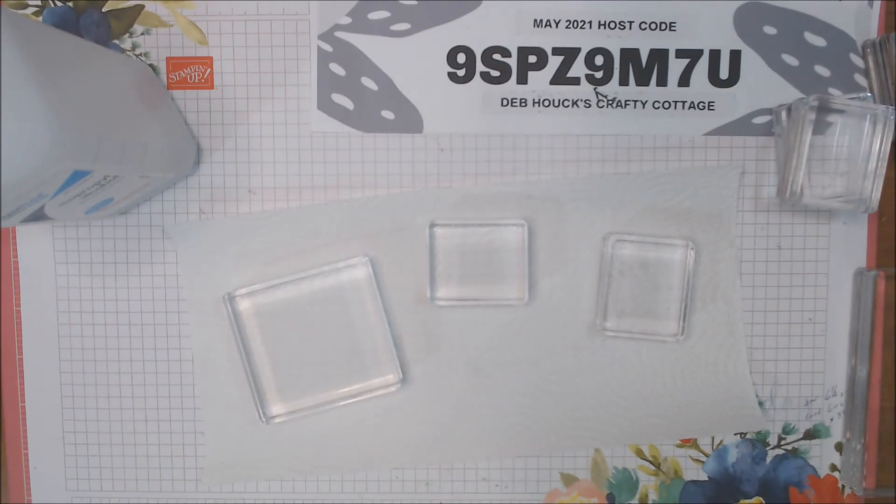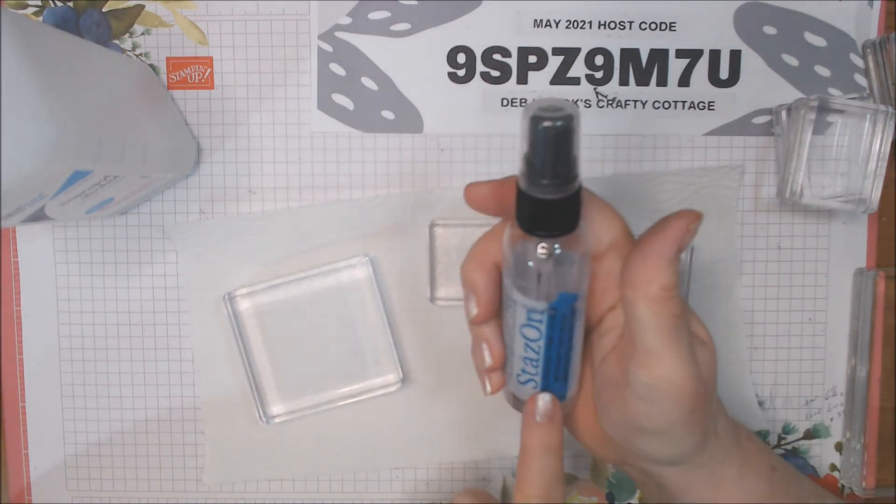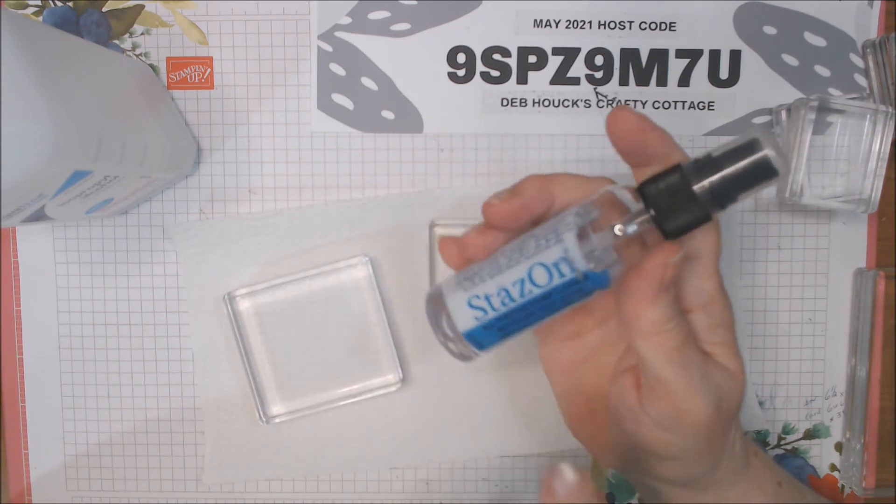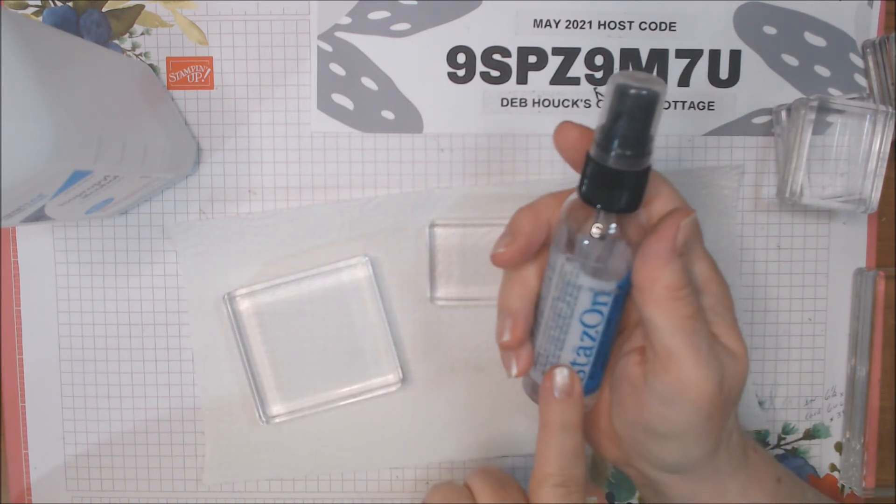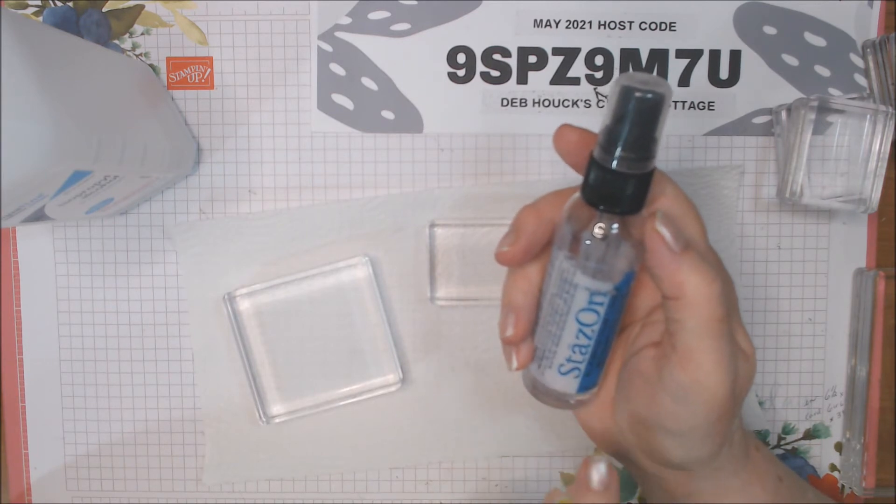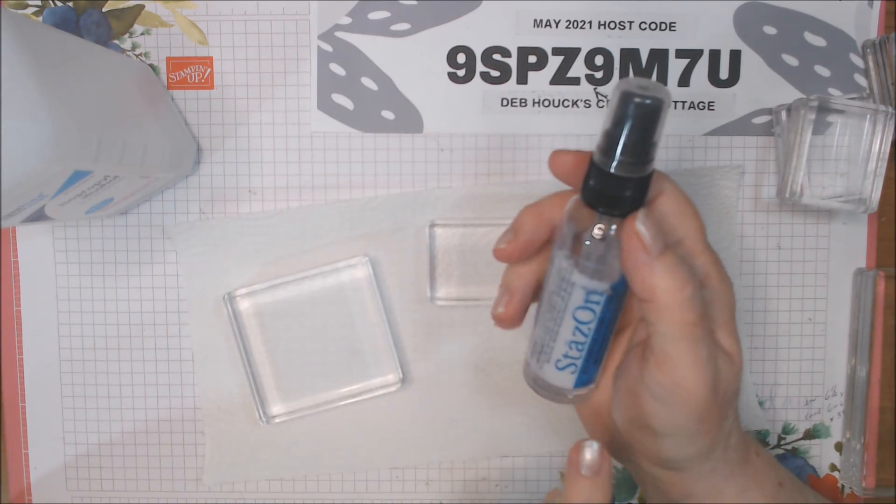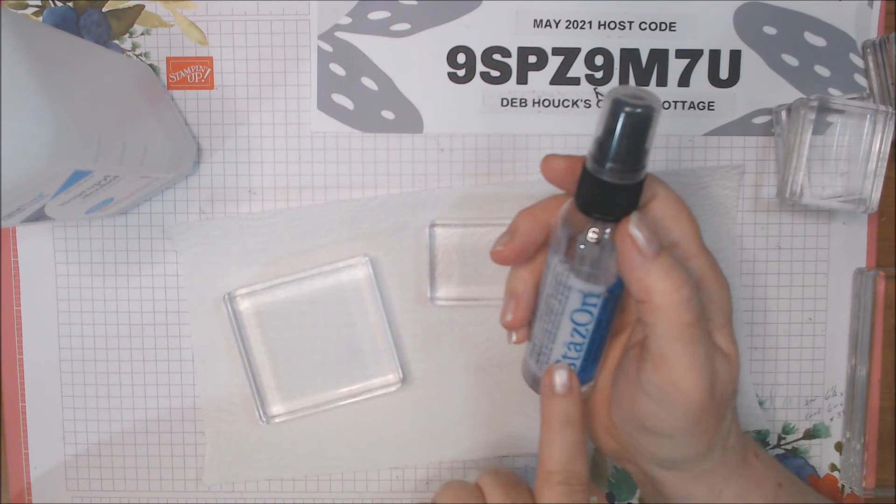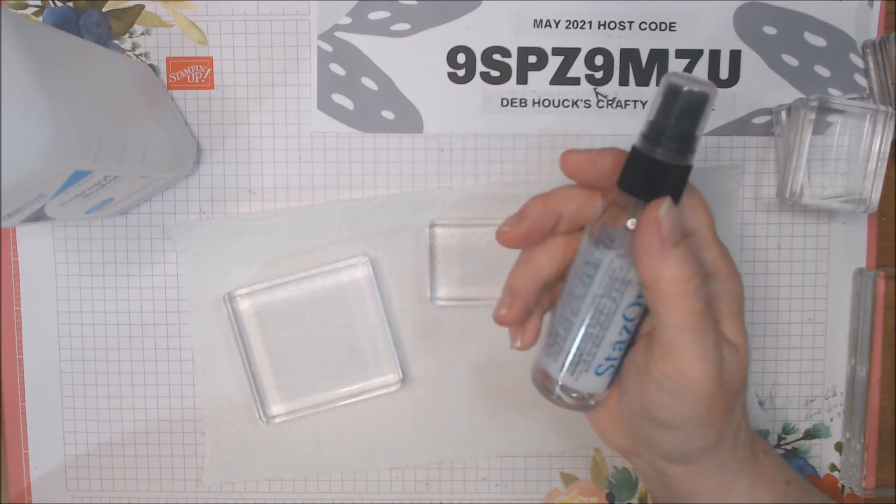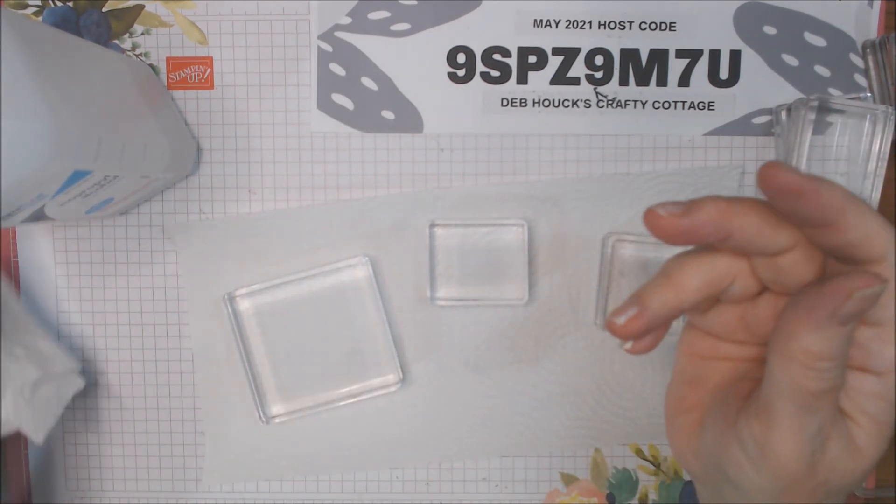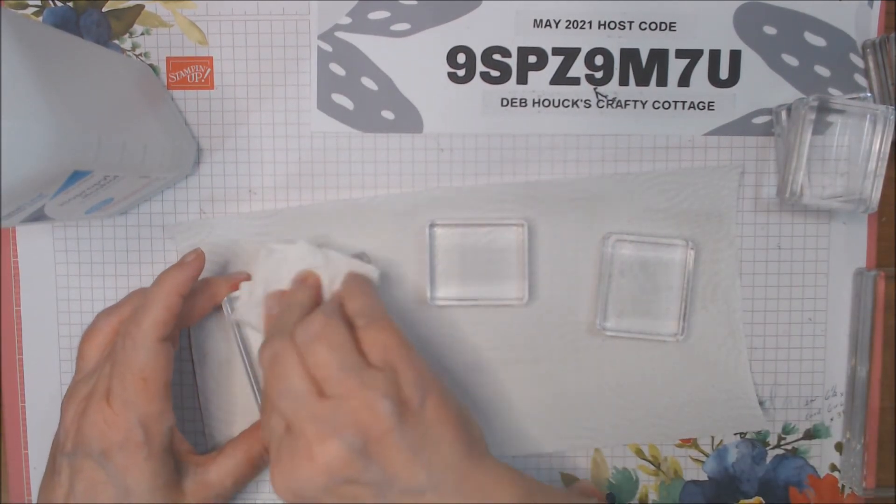Now also, if you're using StazOn ink, there is StazOn—I don't know if this is the exact bottle that Stampin' Up sells, but they do sell StazOn cleaner. It's all-purpose stamp cleaner, but it's meant for the StazOn. And we have black and saddle brown now in StazOn, and this is the only cleaner I have found that cleaned your stamps from StazOn. And I would use it right away when you're done using your stamp. In fact, I need to order another bottle pretty soon for that because I do plan on using my StazOn soon.